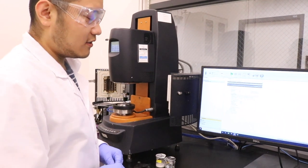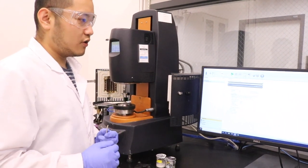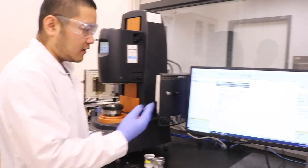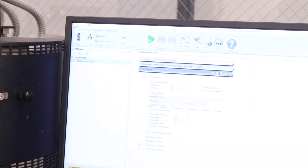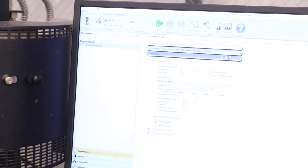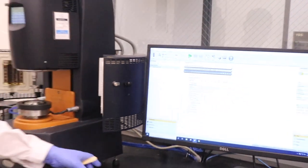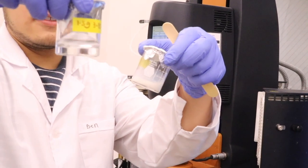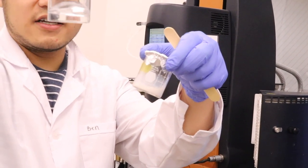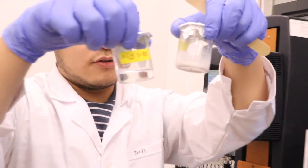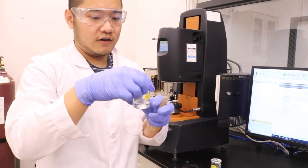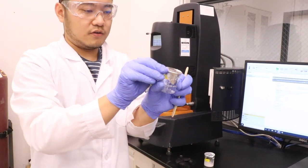So to run the rheology test, the first thing is to program your experimental steps on the provided software. We will need to set up the shear rate and the temperature and points per decade. Today I have two different types of samples with different viscosity. As you can see, this one has a liquid-like property while this one has a more solid flow ability. So we will test both and compare their rheological behavior.